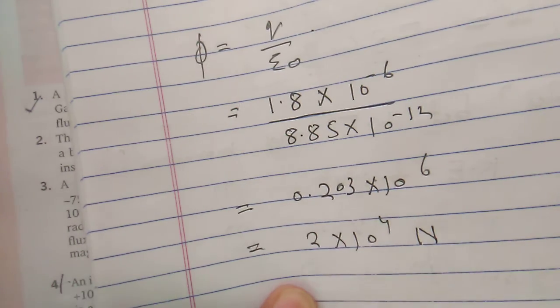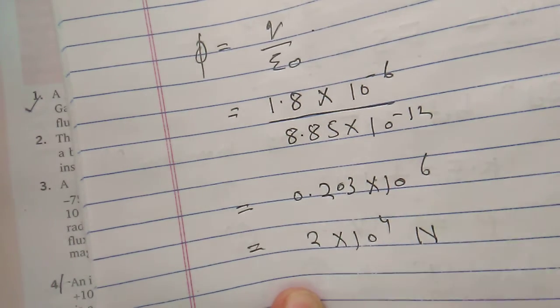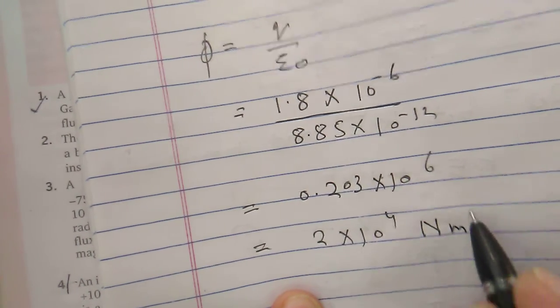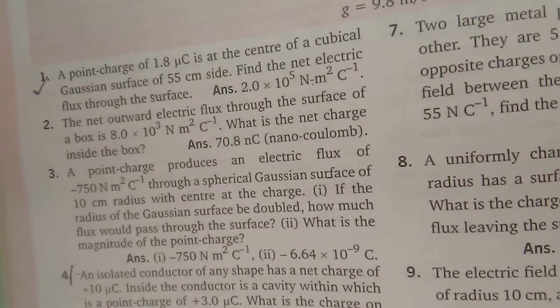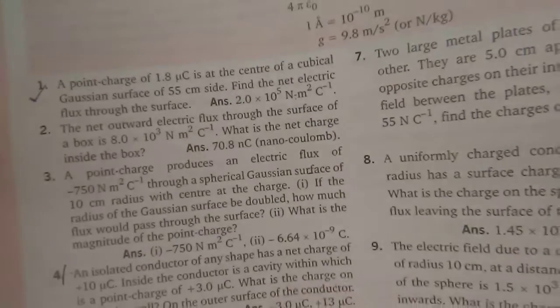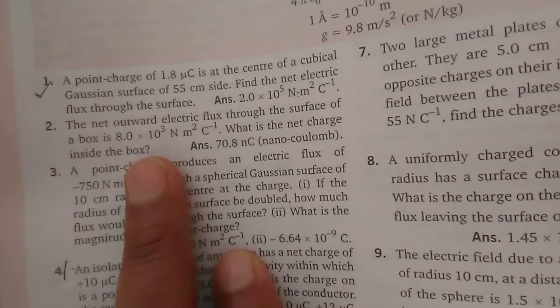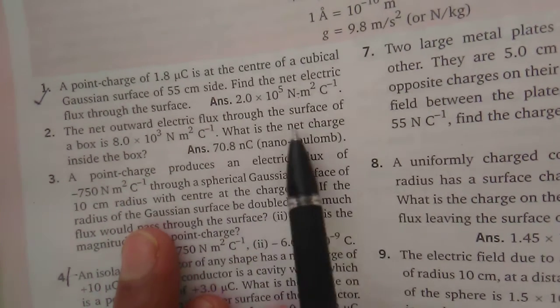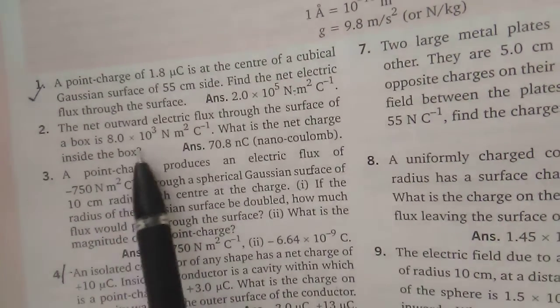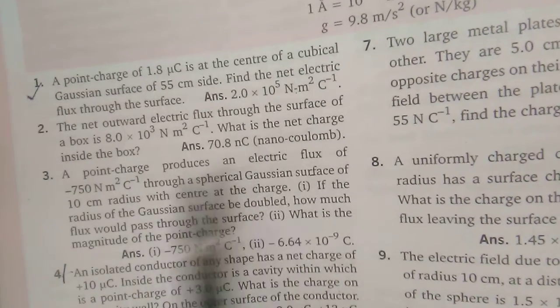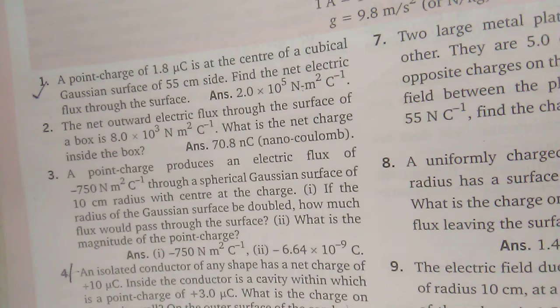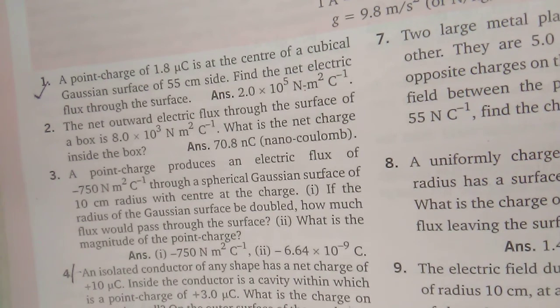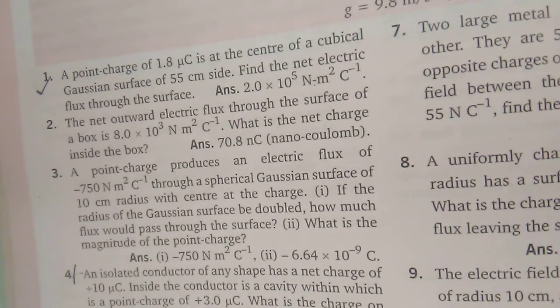The unit will be Newton meter squared per coulomb. This is the answer to question number one. Now starting with the second question: the net outward flux through the surface of a box is given — what is the net charge inside the box? We use the same formula.